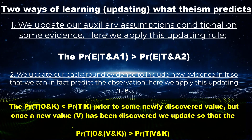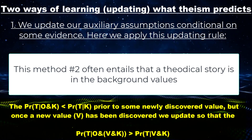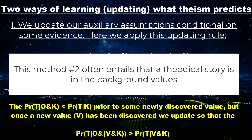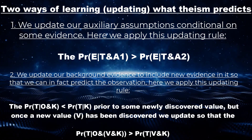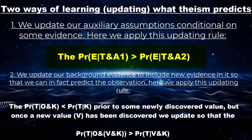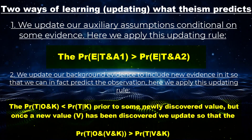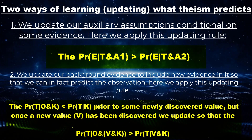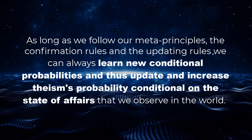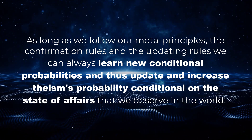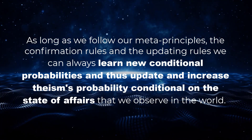In the second method, our newly discovered evidence may well be a theodicy lurking in the background and so screen off the initial disconfirmation, especially if we find some new data such as saint-making, which gives a probable reason for a theodical story. In conclusion, these are the two ways we can learn what theism predicts: either we change our auxiliary hypotheses about value and so screen off disconfirmation, or we discover new evidence which, when conjoined with the background evidence, will actually end up positively confirming theism. In either case, as long as we follow our meta-principles — the confirmation rules and the updating rules — we can always learn new conditional probabilities and update and increase theism's probability, conditional on the state of affairs that we observe in the world.